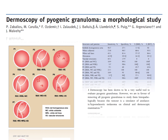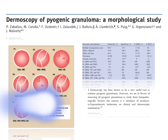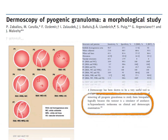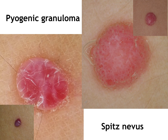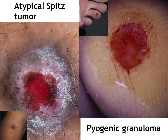Even though we have high confidence with the dermoscopic diagnosis of pyogenic granuloma, histology is strongly recommended because of its similarity with some benign and malignant tumors. For instance, here we have a pyogenic granuloma on the left and a melanoma on the right. Another example could be the dermoscopic analogy between pyogenic granuloma and hypopigmented Spitz nevus, or even between a typical Spitz tumor and pyogenic granuloma.